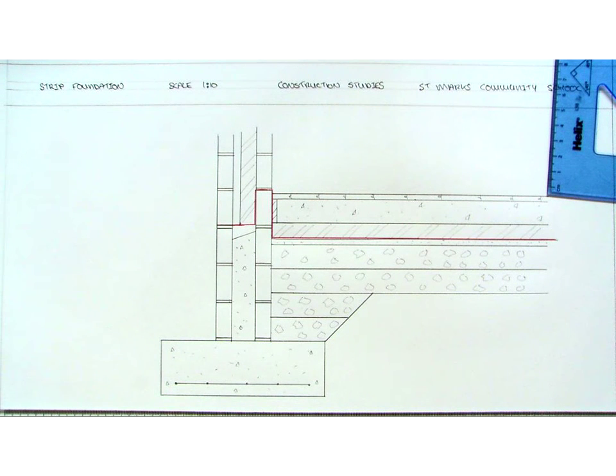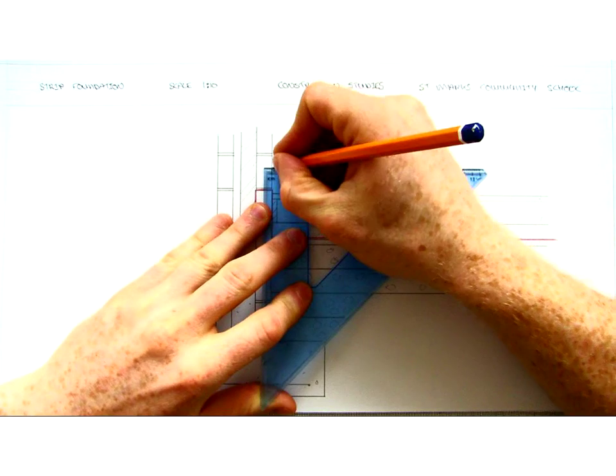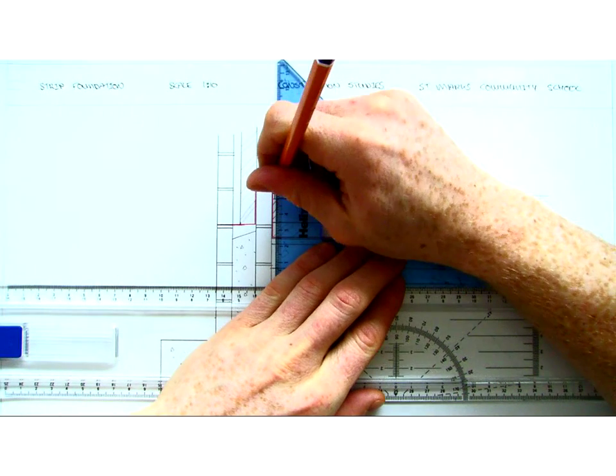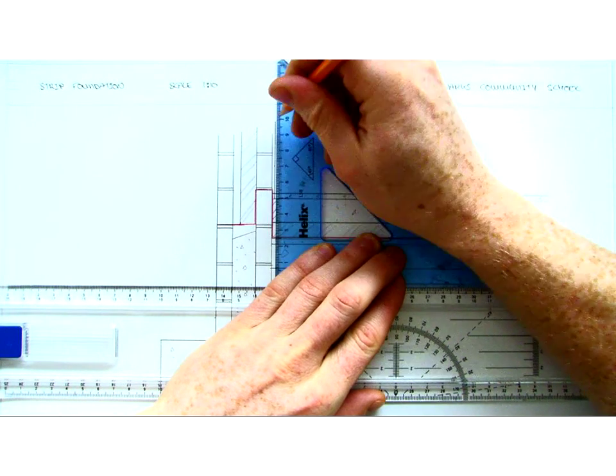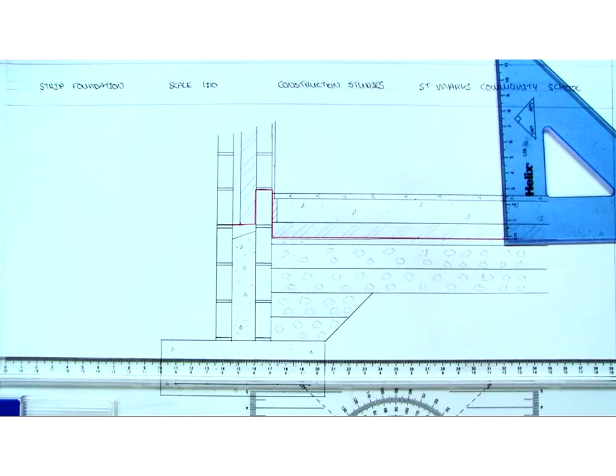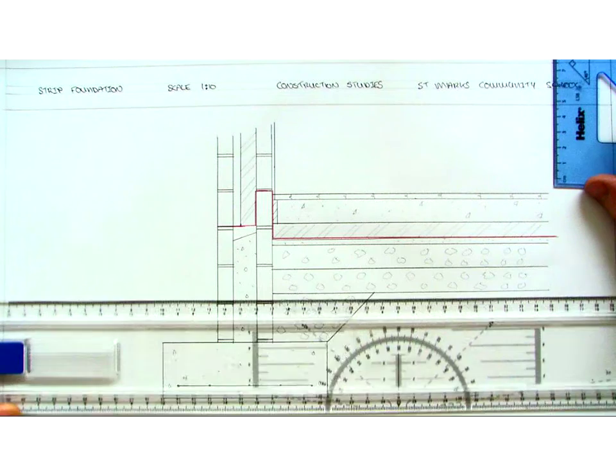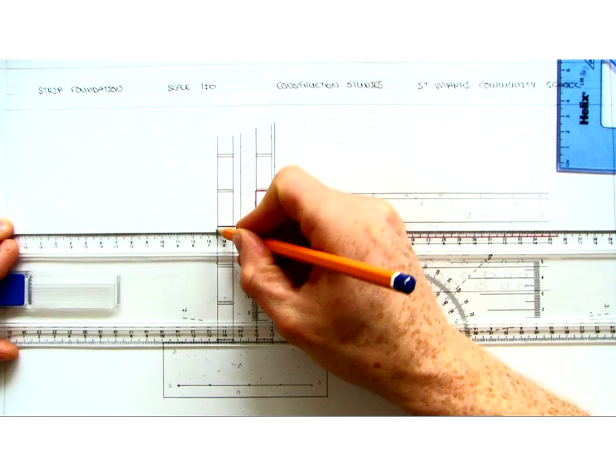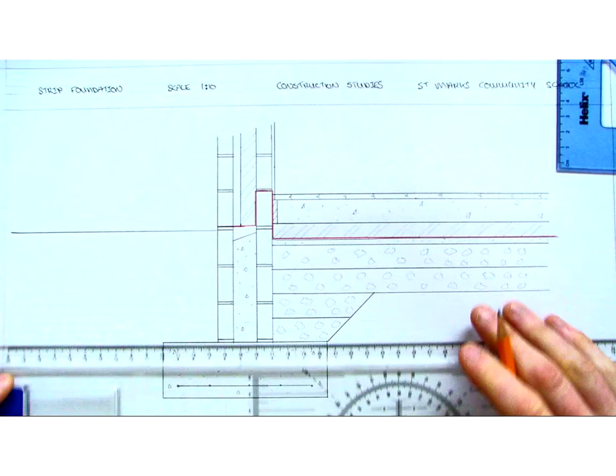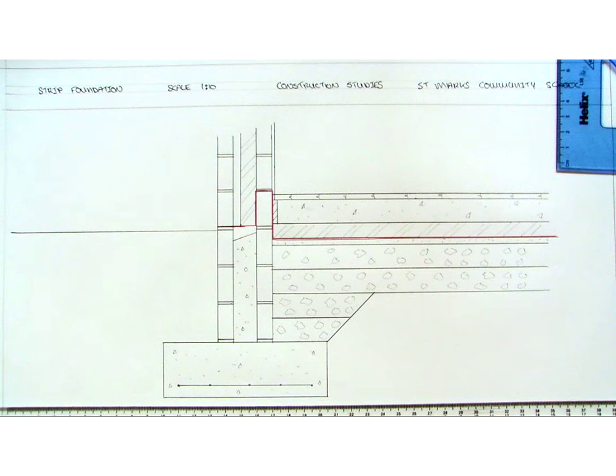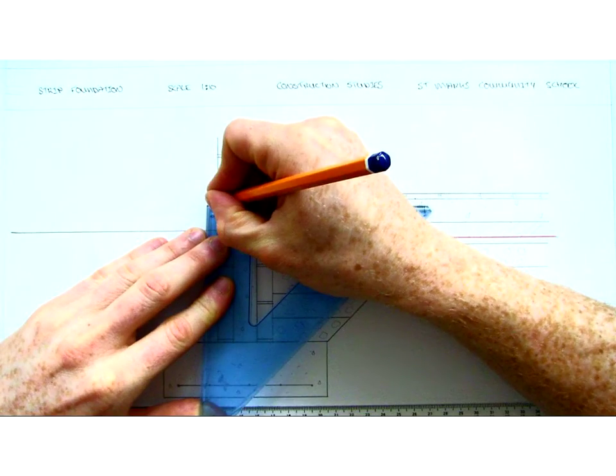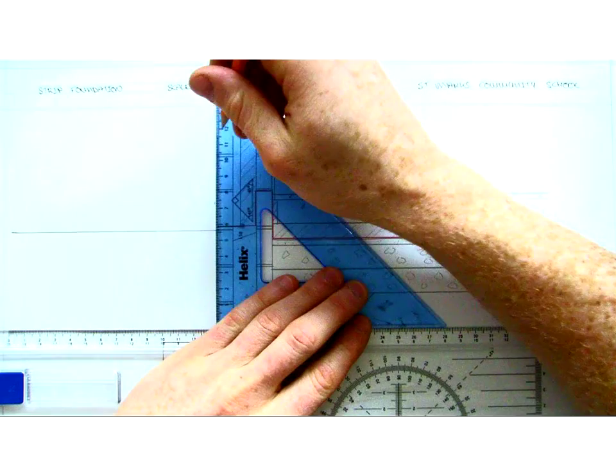We can also mark in our internal plaster. So our internal plaster is 12mm, and we measure out just over a millimeter and draw in our line. We can now come over to our left hand side and from the top of the third block we can draw in our ground on the outside. We can also mark in our external render, again 18mm, and draw that directly in.